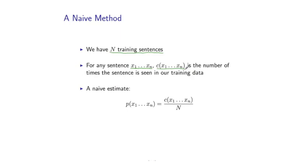A very simple estimate is then the following, where we define p to be simply c over n. So we simply count the number of times the sentence has been seen and divide by the total number of sentences seen in our training corpus.